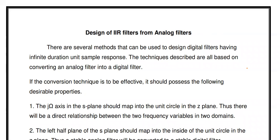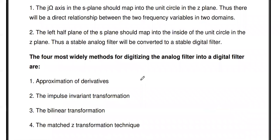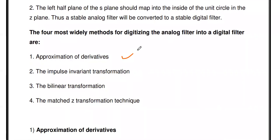There is no direct method in order to design the digital filter. In order to design the digital IIR filter, first we have to design an analog filter, then we have to convert the analog into digital. There are different transformation techniques: approximation of derivative, impulse invariant transformation, bilinear transformation, and matched Z-transform technique. These are the widely used methods to digitize the analog filter into digital filter.